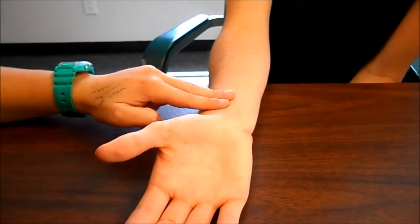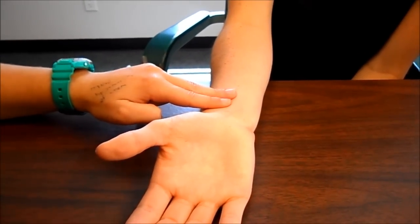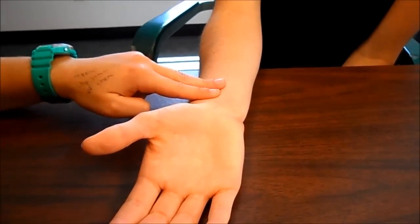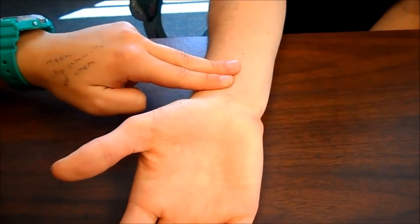On the radial side, find the radial artery, press in with your forefinger and middle finger until you can find the pulse.